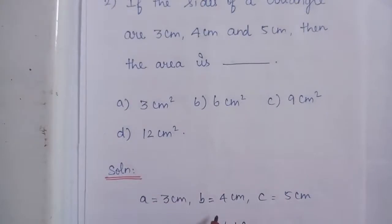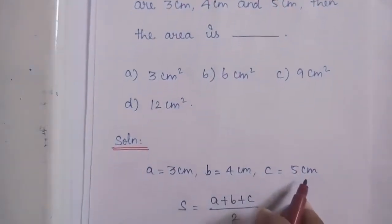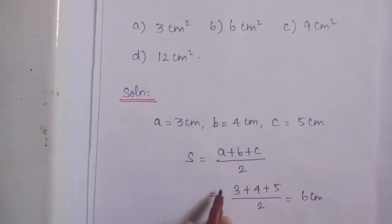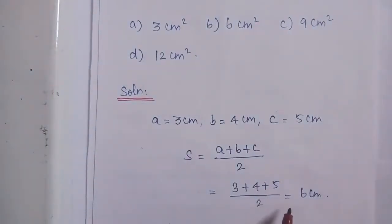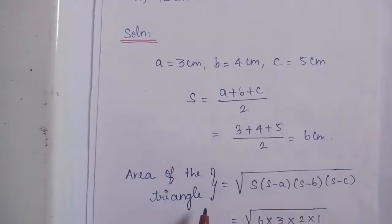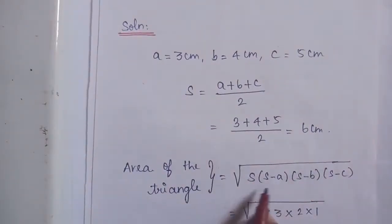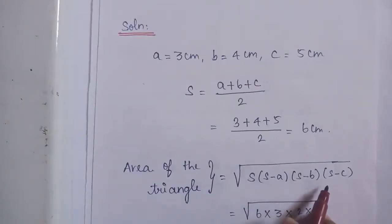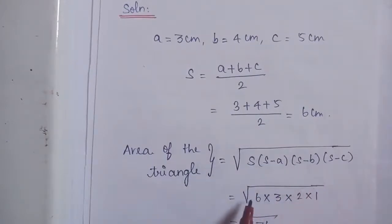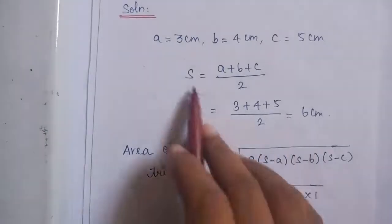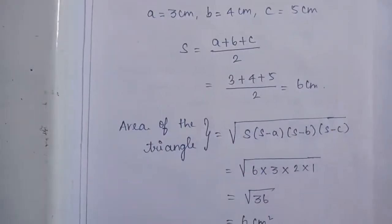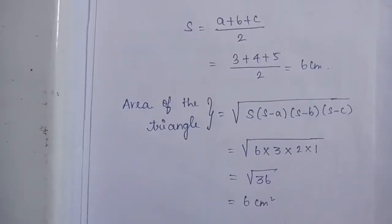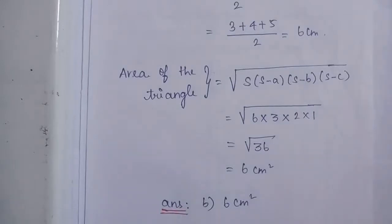Solution: A is 3 cm, B is 4 cm, C is 5 cm. So S is equal to A plus B plus C by 2, which is equal to 3 plus 4 plus 5 by 2, equal to 6 cm. Then area of a triangle using Heron's formula is root of S(S−A)(S−B)(S−C), which is root of 6 into 3 into 2 into 1, since S−A is 3, S−B is 2, S−C is 1. This equals root 36, which is 6 cm square. The correct answer is Option B: 6 cm square.